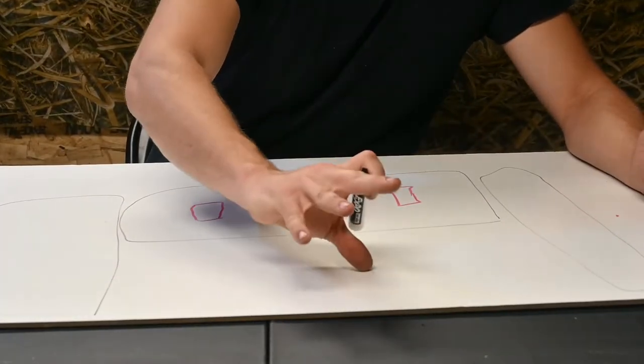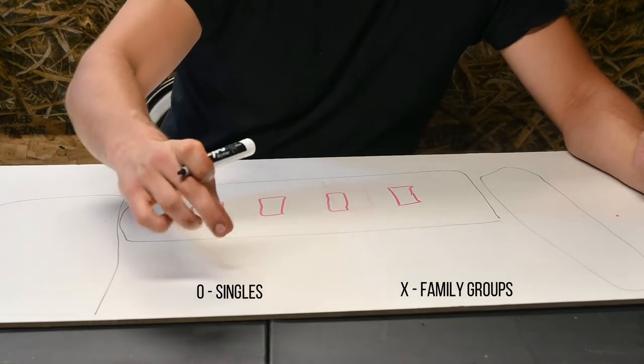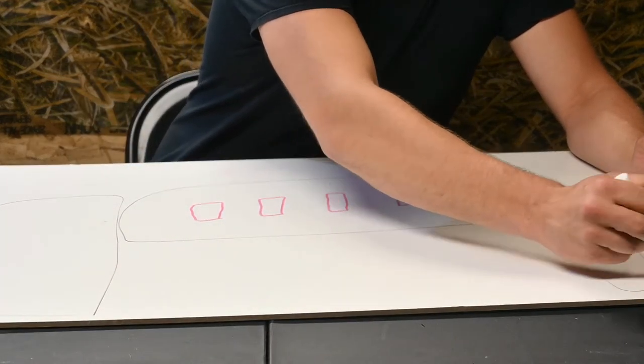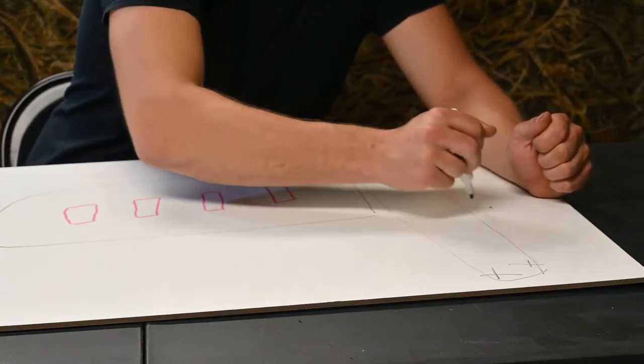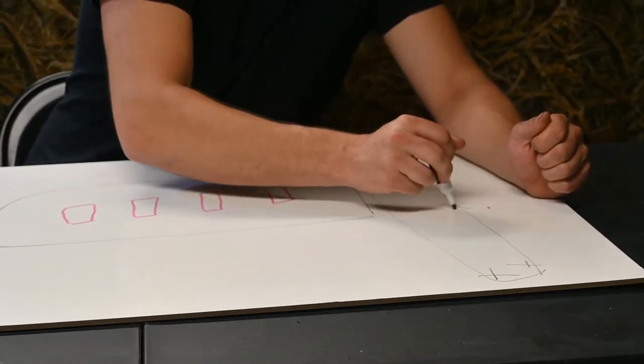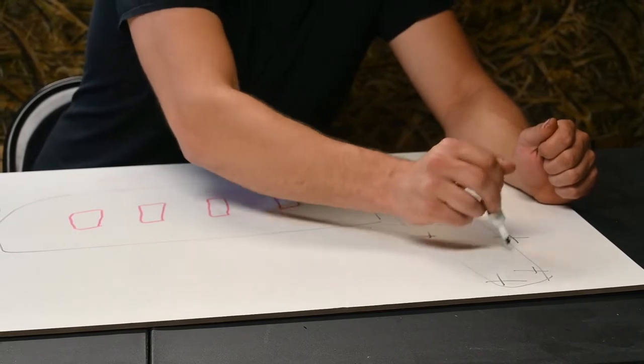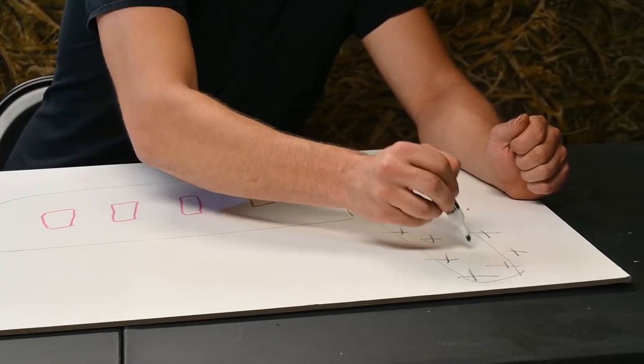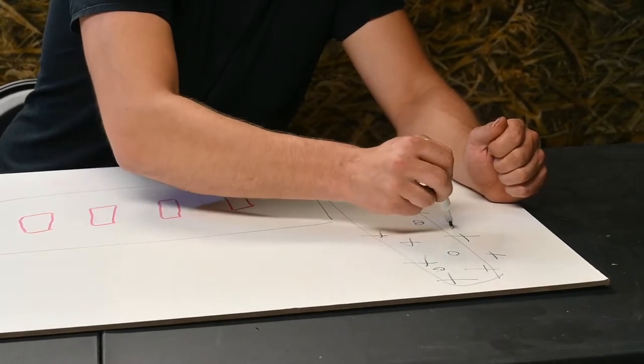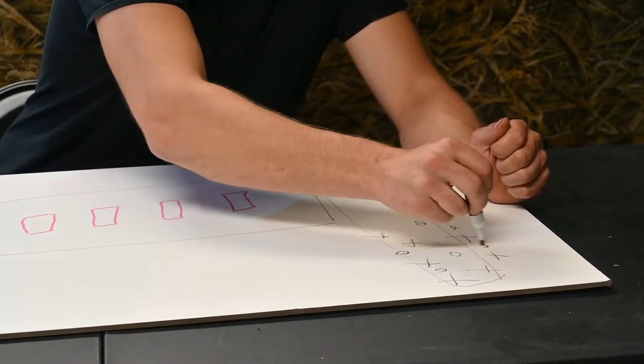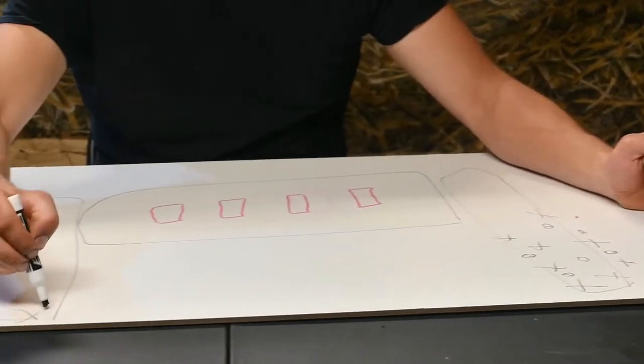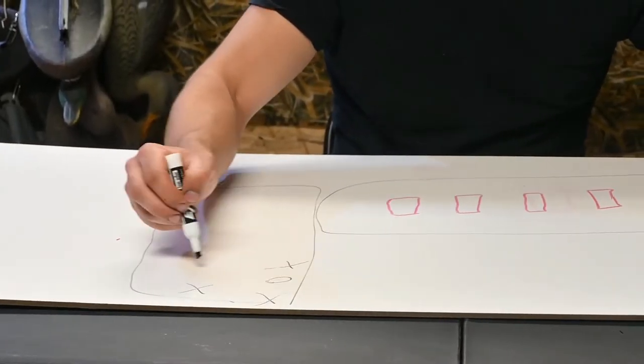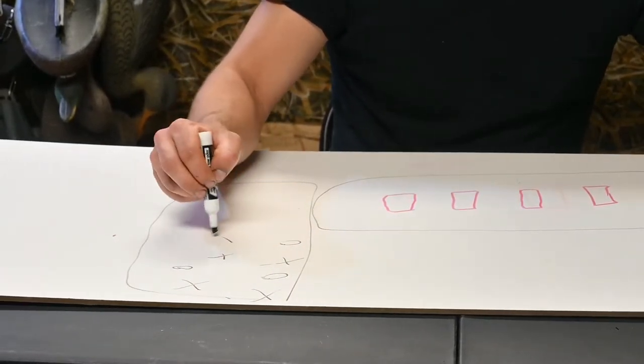So I'm going to do X's as family groups and O's as singles. So I'm going to start off pretty heavy in this corner. Then I want to work it down with family groups and keep it heavy. Then throw a couple singles in there. And we're pretty much going to mimic that on the other side, obviously not exactly the same. You got to make it different because geese aren't always the same.